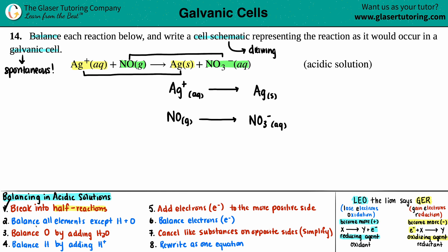Step two: balance all elements except hydrogen and oxygen. There is one Ag on the left and one on the right — balanced. There is one nitrogen on the left and one on the right — balanced. We don't touch oxygens at this stage. Since both are already balanced, we effectively skip step two.